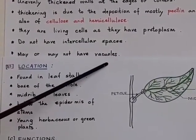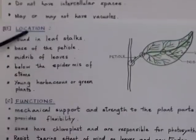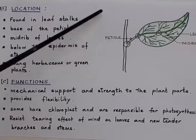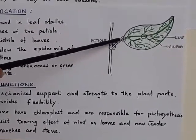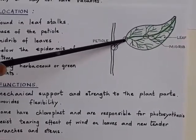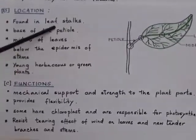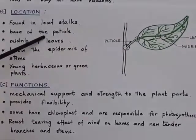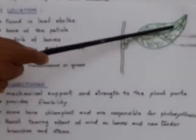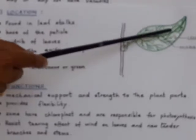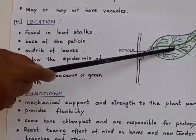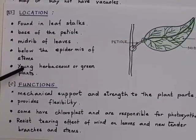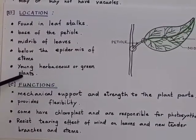Now, where are these colenchyma cells present? Location: they are found in the leaf stalk, which is the petiole. They are present all along the leaf stalk and at the base of the petiole. They are also found in the midrib of the leaves, below the epidermis of stems, and in young herbaceous or green plants.